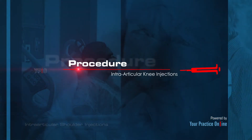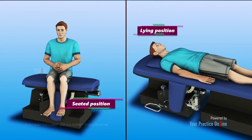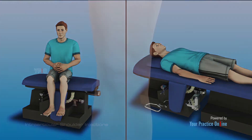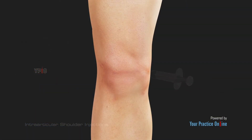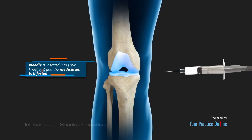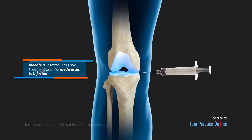Intra-articular knee injections may be performed using various approaches. During the procedure, you will be seated or will lie on your back with the affected knee flexed or extended. The skin over the injection site is sterilized and numbed with a local anesthetic. The needle is then inserted into your knee joint and the medication is injected.